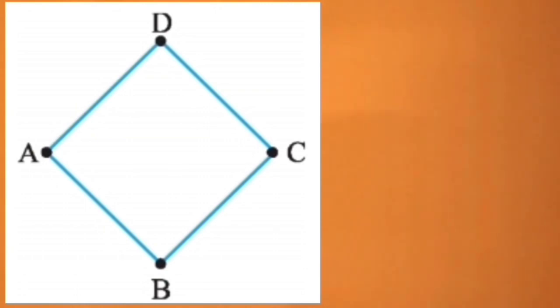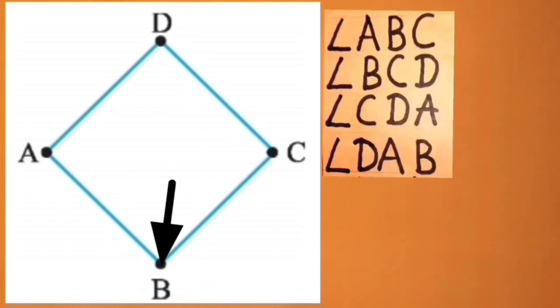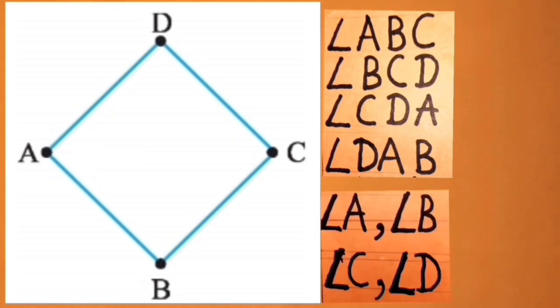Now let's take another example. Here we have a closed figure ABCD. Its angles are angle ABC, angle BCD, angle CDA and angle DAB. These can also be written as angle A, angle B, angle C and angle D.